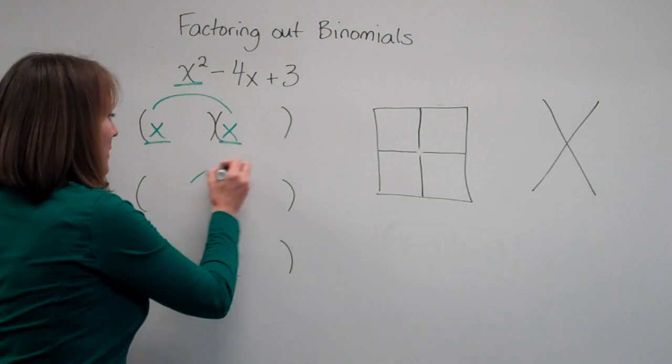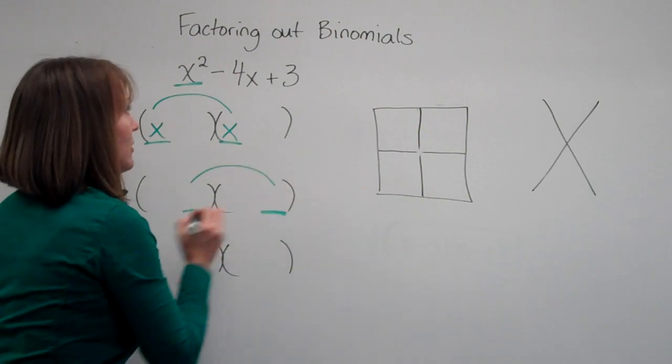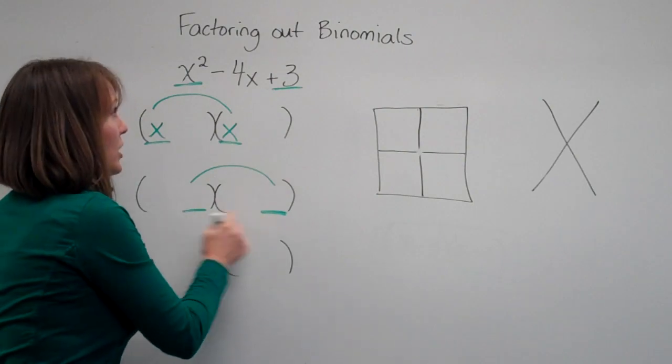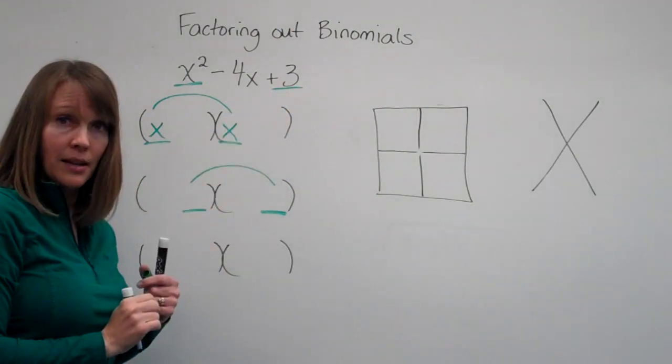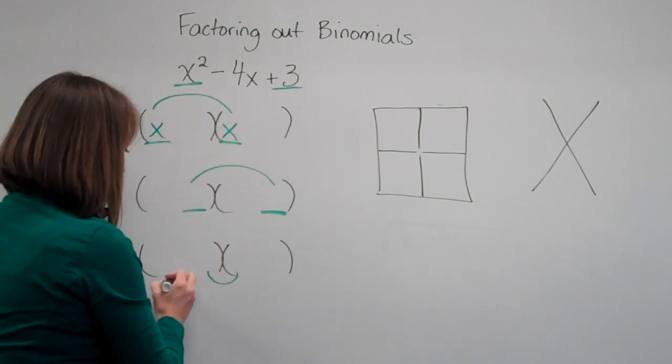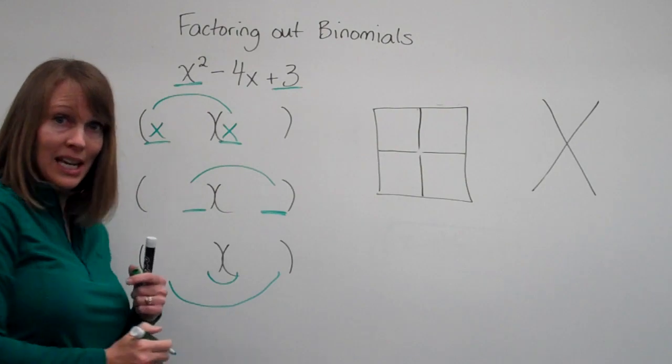Now, when we multiplied our last terms together, that gave us our last term. So we know that these two numbers are going to be factors of 3. And to get our middle term, we know we multiplied the inside and the outside terms here and added them together.